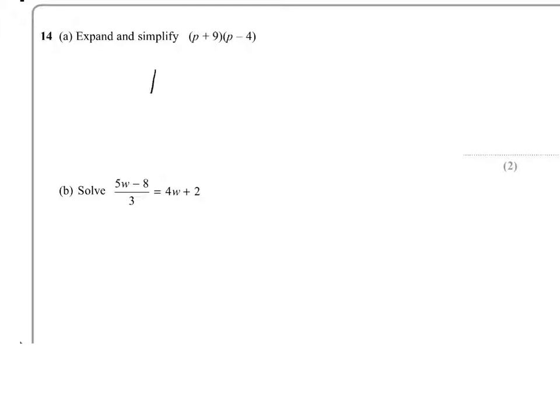We've got p times p, which gives me p squared. We've got p times minus 4, which is minus 4p. I'll now multiply by the 9. So, the 9 times p gives me 9p. And the 9 times minus 4 gives me minus 36.